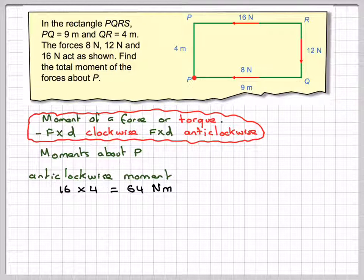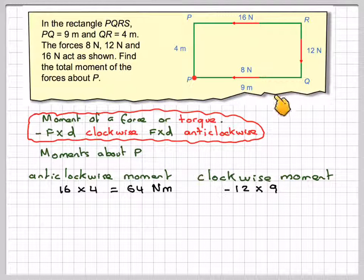The 12 newton force is going to move clockwise, but the distance here is going to be 9 times 12. So the clockwise moment will be minus 12 times 9, minus because it's going clockwise.